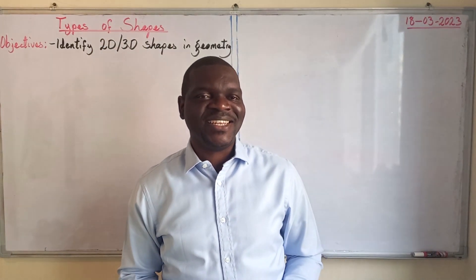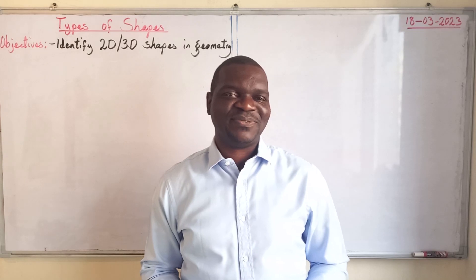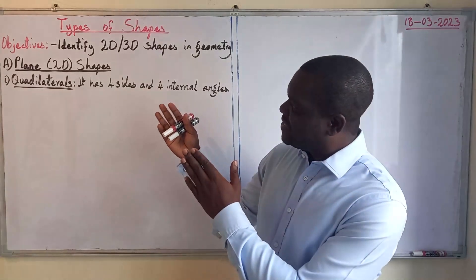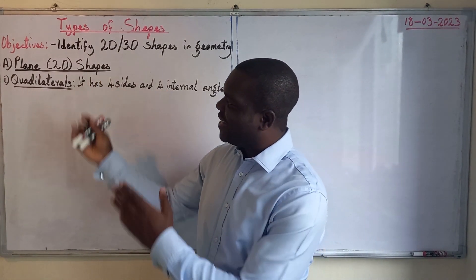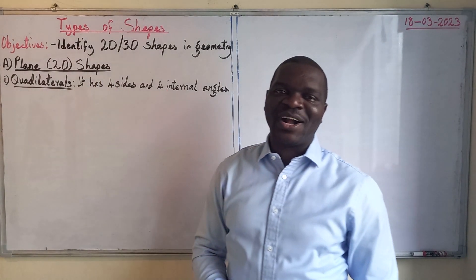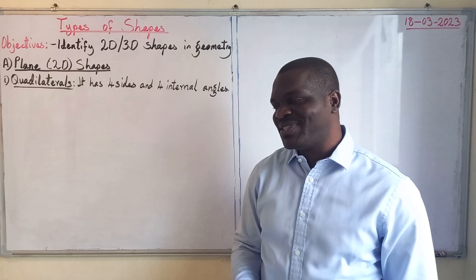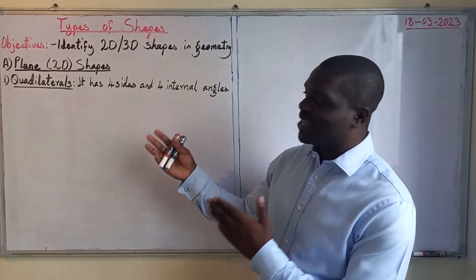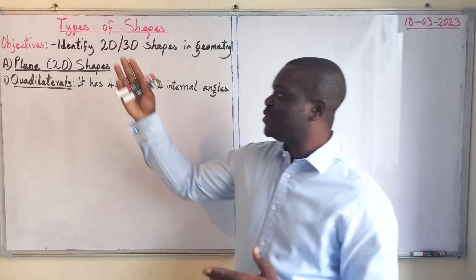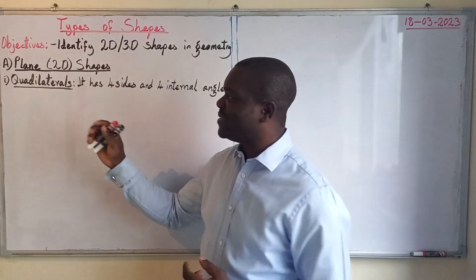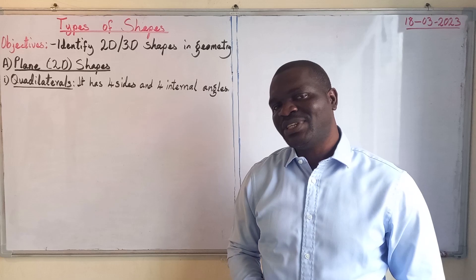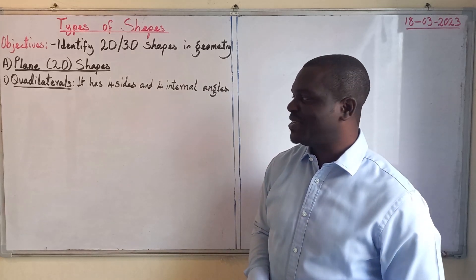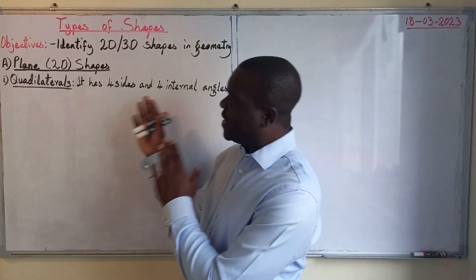The first type of shapes we want to identify are called plane shapes. Plane shapes can also be called 2D shapes, and 2D here means two-dimensional shapes.